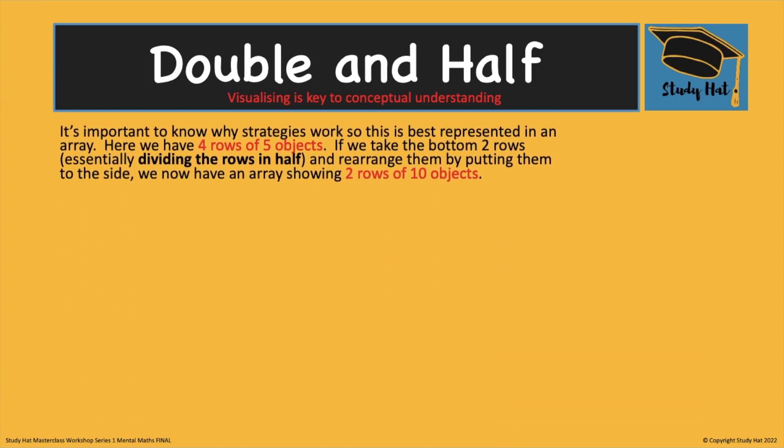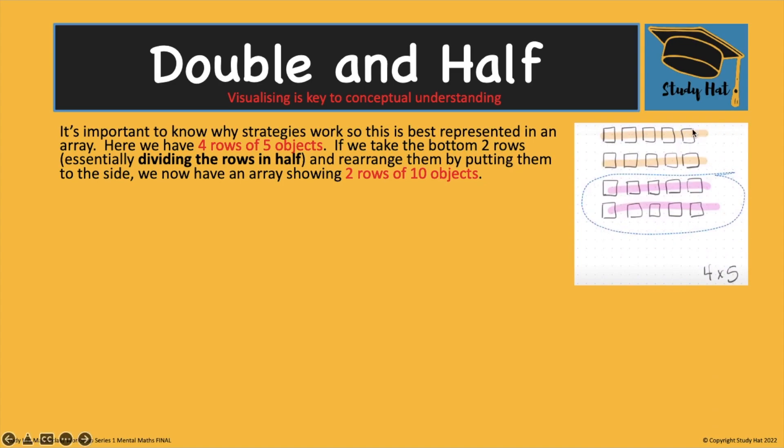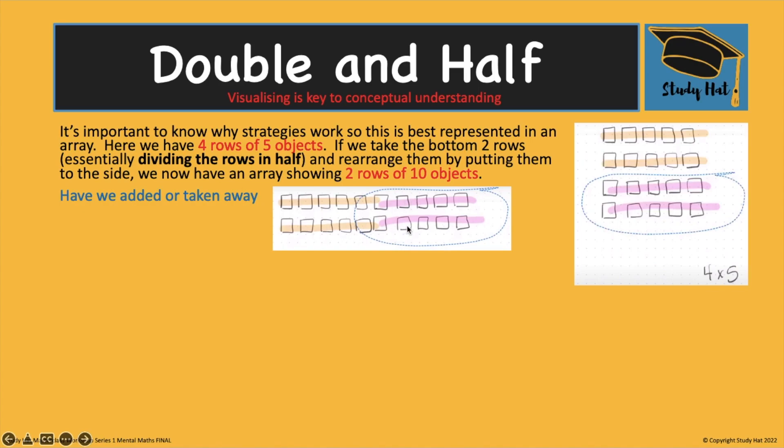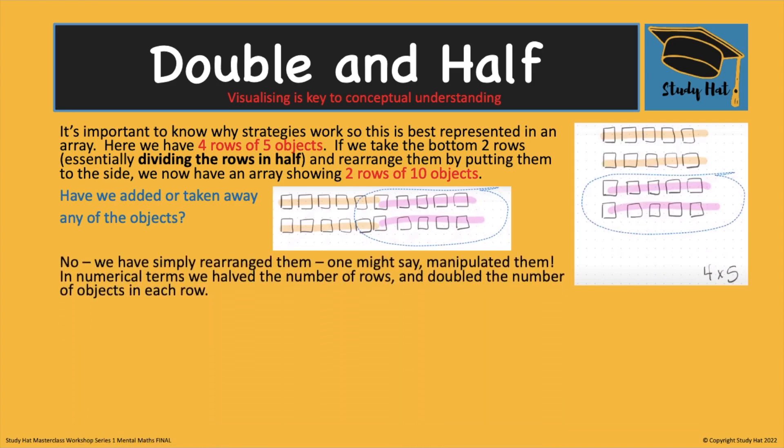So in its most simplest form doubling and halving can be seen visually using an array. Here are four rows of five objects in each row. If I half this if I remove these from here and place them perhaps beside the others that means I've doubled what I had in my initial row. I'm now left only with two rows of 10 objects but I halved the initial equation and have doubled. The key thing to remember is that you haven't added anything you haven't taken anything away. You've just manipulated the rows and objects in order to play with the numbers and make it easier to work out.